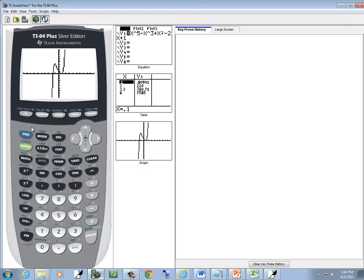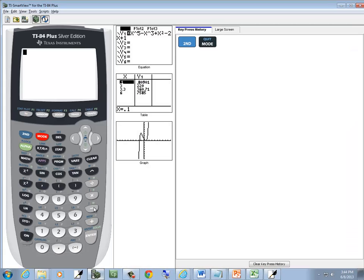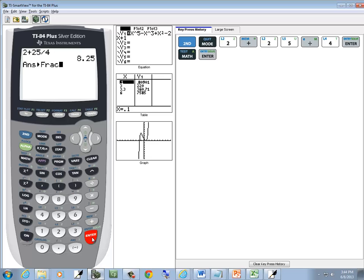I'm in graph mode right now, so I'll go ahead and do a second mode to exit out. And we'll type in 2 plus 25 divided by 4. So 2 plus 25 divided by 4. Press Enter. And we get a decimal. To change any decimal to fraction on your calculator, you press Math, Enter, Enter. And you see you've got 33 over 4.